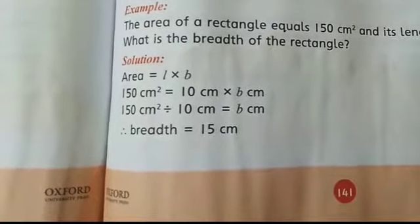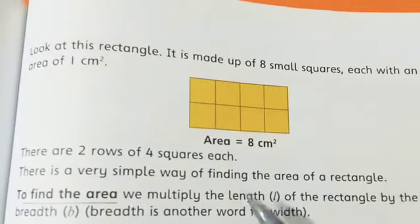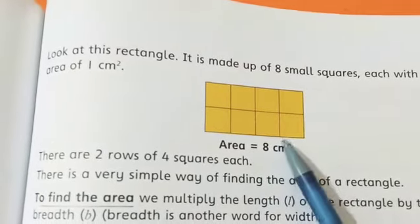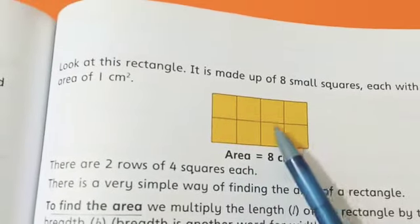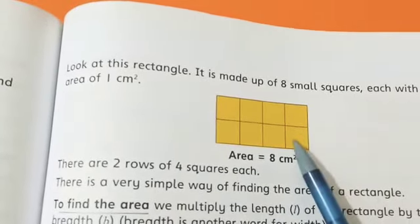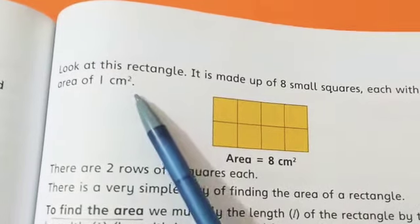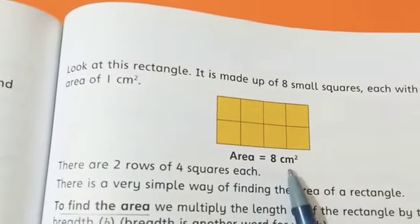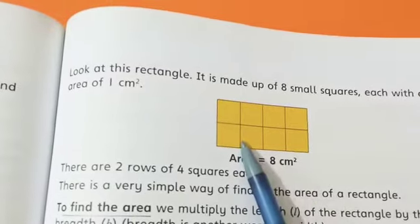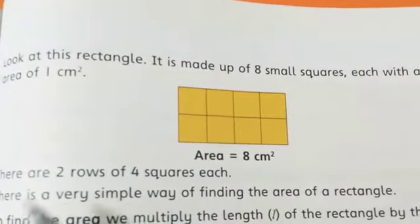Now come to page 141. Students, look at this rectangle. It is made up of eight small squares: one, two, three, four, five, six, seven, eight. Each with an area of one centimeter squared. So the area of this rectangle is 8 centimeter squared.